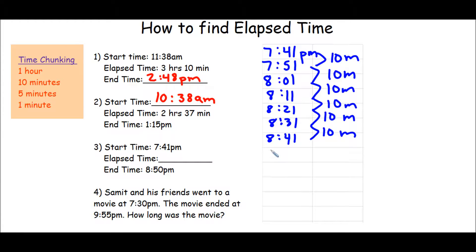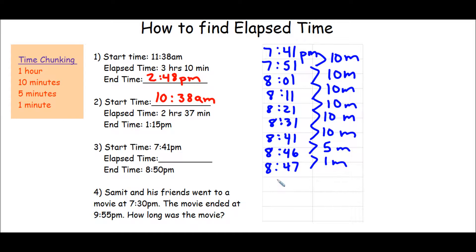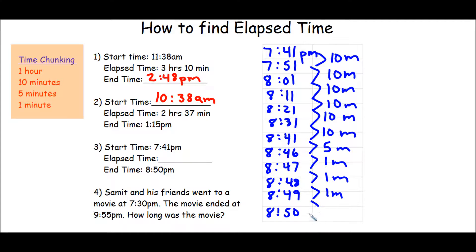So I'm going to add 5-minute chunks. 8:41 plus 5 minutes is 8:46 — that's 5 minutes. Now if I add another 5 minutes, I'd get 8:51, so I've got to add 1 minute at a time. 8:46 plus 1 minute is 8:47, then 8:48, then 8:49, and 8:49 plus 1 minute is my 8:50. Connect — 1 minute.